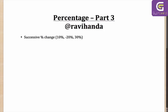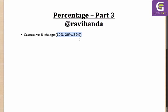It could be that one change is positive and two are negative — that also is successive percentage change. The problem is a lot of people make mistakes here. With a +10%, then +20%, then +30% change, a lot of people think you can simply add them up and say the total change is 10+20+30 = 60%. But if that is what you think, you are wrong.